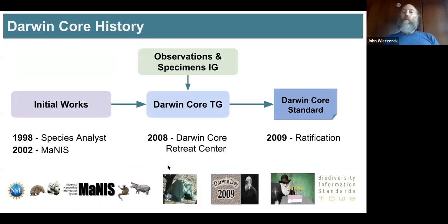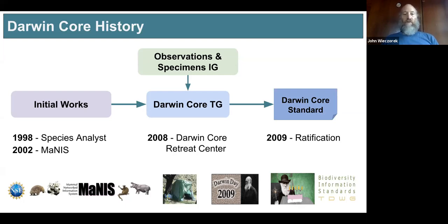A little bit of Darwin Core history: Darwin Core came into existence under an observations and specimens interest group. The initial works predate any of that, in 1998, where a 20-term Darwin Core was made in order to do some early collaborative federated database queries. In 2002, along with the initial growth of GBIF and an early protocol for sharing data via something called the Distributed Generic Information Retrieval protocol, the MANIS mammal information network on GBIF put together a version of Darwin Core that was much richer in terms.